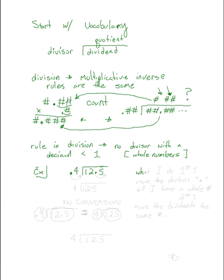Well, what I do first is move the divisor's decimal point till I have a whole number. So here I just need to move it over 1 to make 4. And so then what would happen second is move the dividend's decimal point the same number. So I move this over 1, so I'm going to move this over 1. I'm going to have 4 divided into 125.